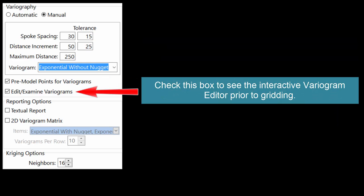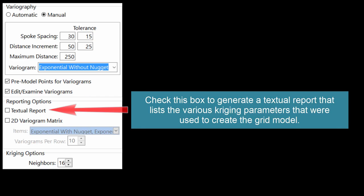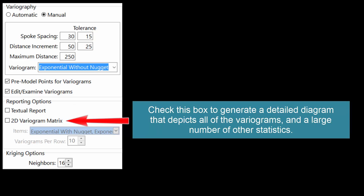Check this box to see the interactive variogram editor prior to gridding. Check this box to generate a textual report that lists the various Kriging parameters that were used to create the grid model. Check this box to generate a detailed diagram that depicts all of the variograms and a large number of other statistics.